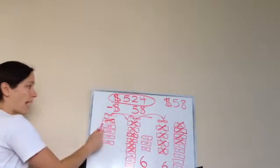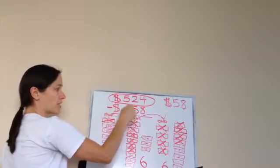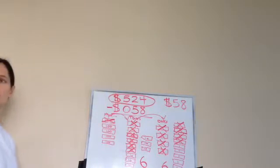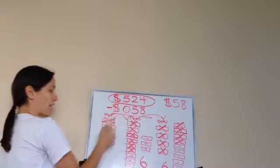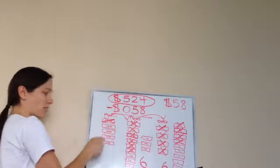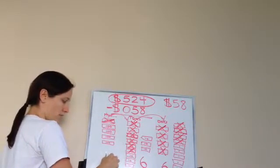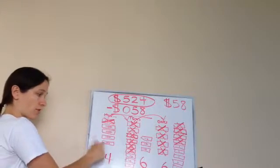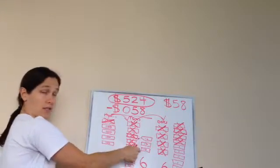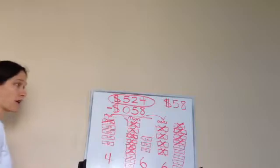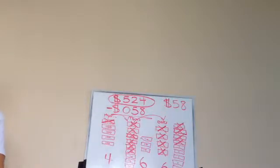Very good. Now, do I take away any hundreds? I'm going to put a zero there. That means I don't have to take away any hundreds. Okay? So I don't have to take away any more. So how many hundreds do I have? Four. What's my final answer? Four hundreds, six tens, and six ones makes four hundred sixty-six dollars, right?